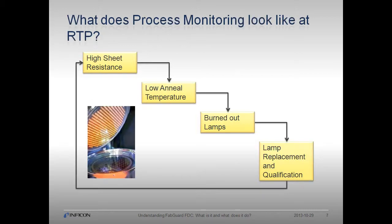Let me give you an example of process monitoring in your factory using an RTP tool. We've run a test wafer at RTP and Neal, and the sheet resistance is high, as determined by our SPC chart. This usually happens when the dopant isn't sufficiently activated, and suspects that the temperature was low. Equipment maintenance discovers more than the allowable number of burned-out lamps. The lamps are replaced, and the RTP tool is qualified and returned to production.